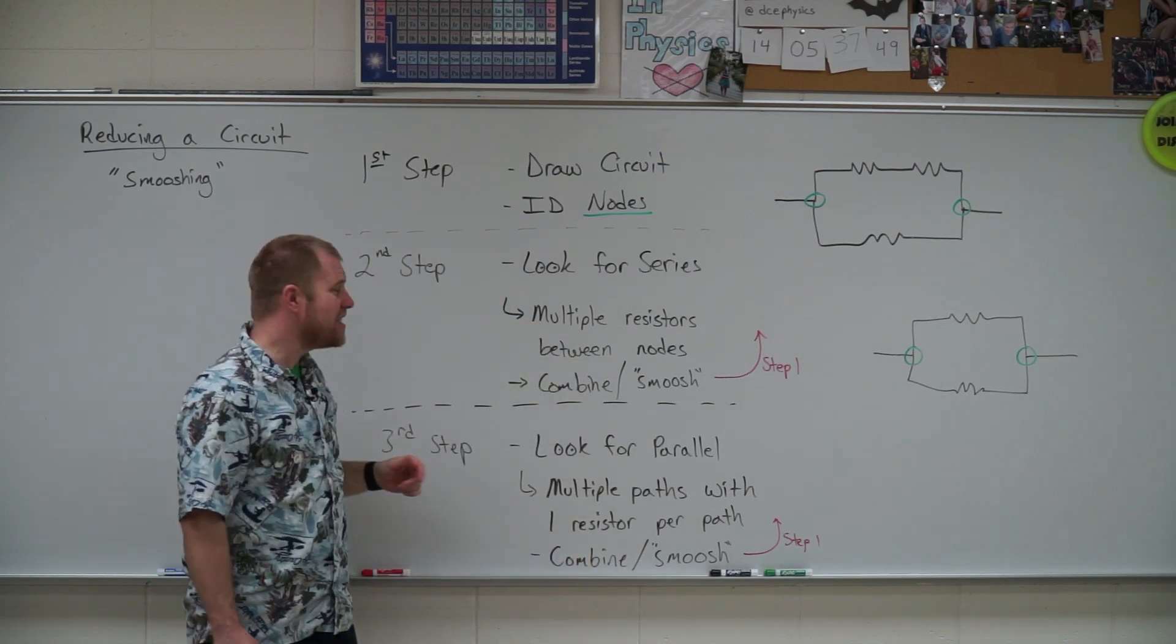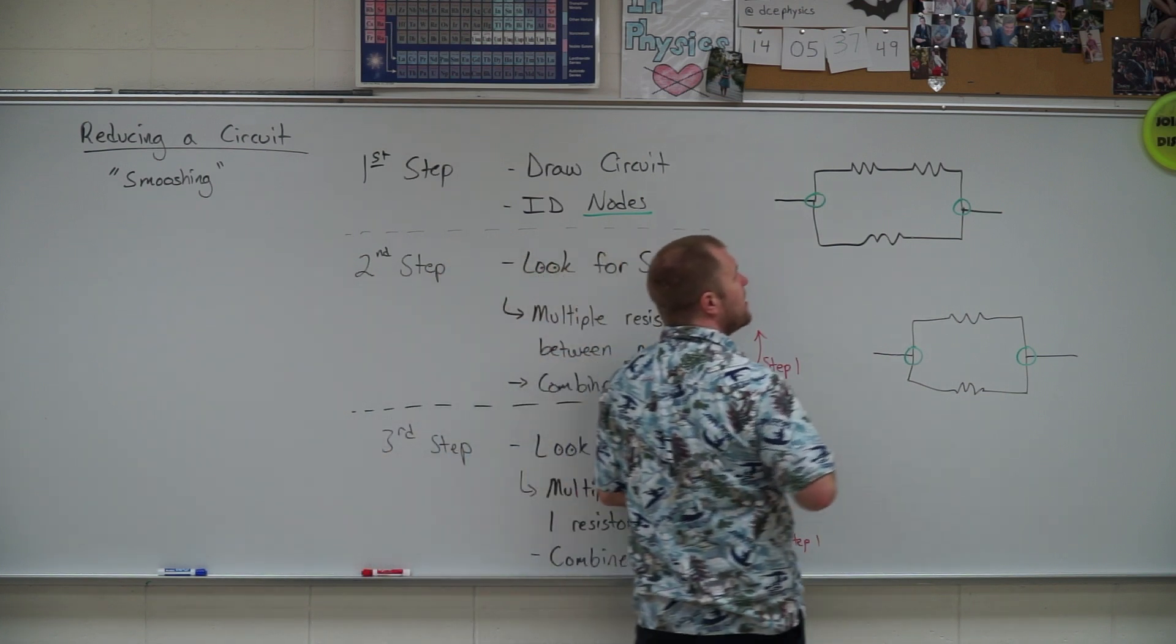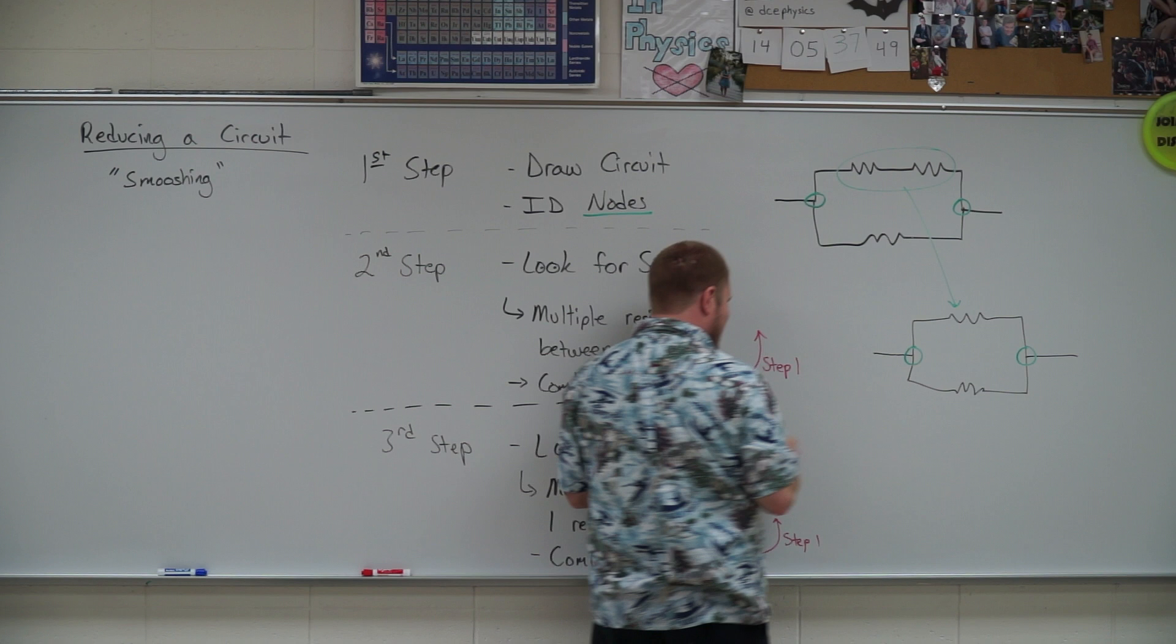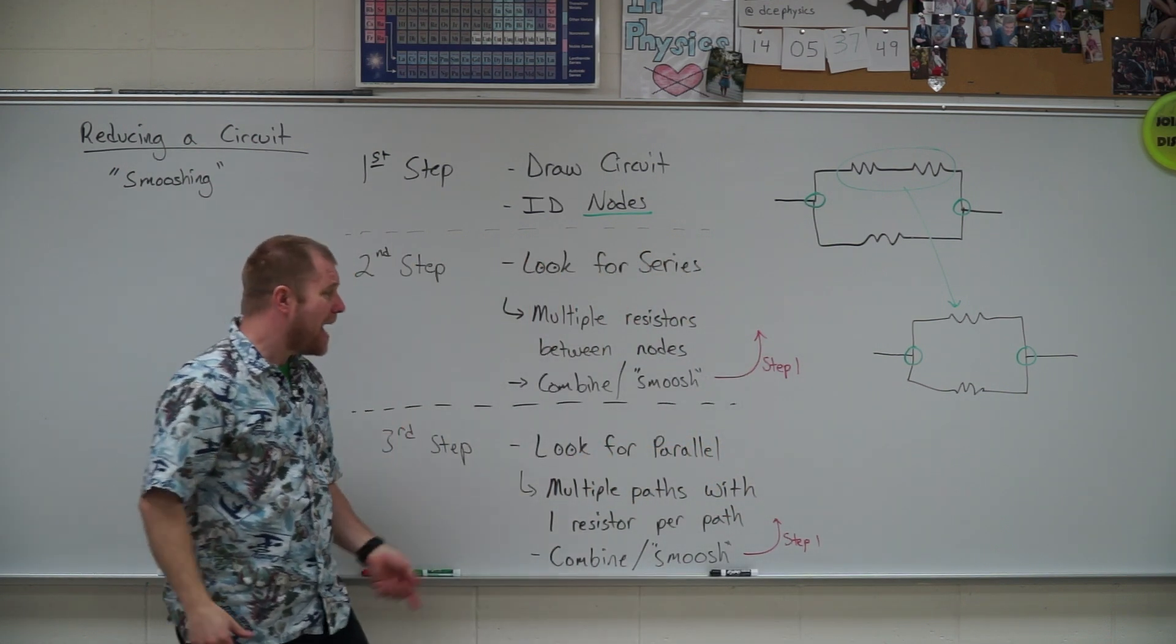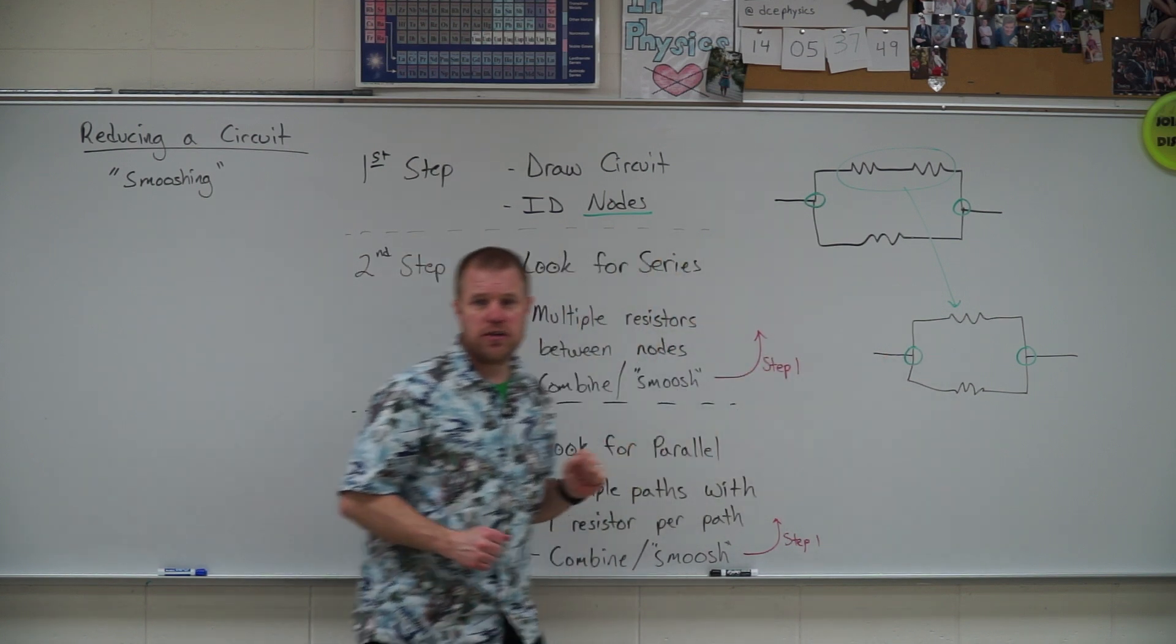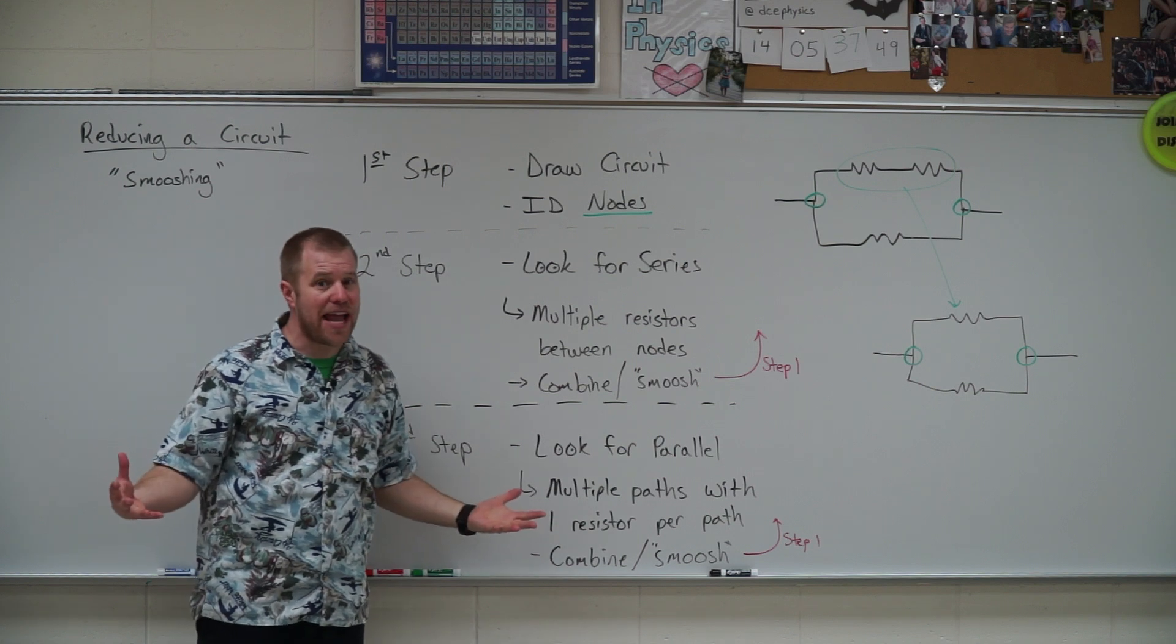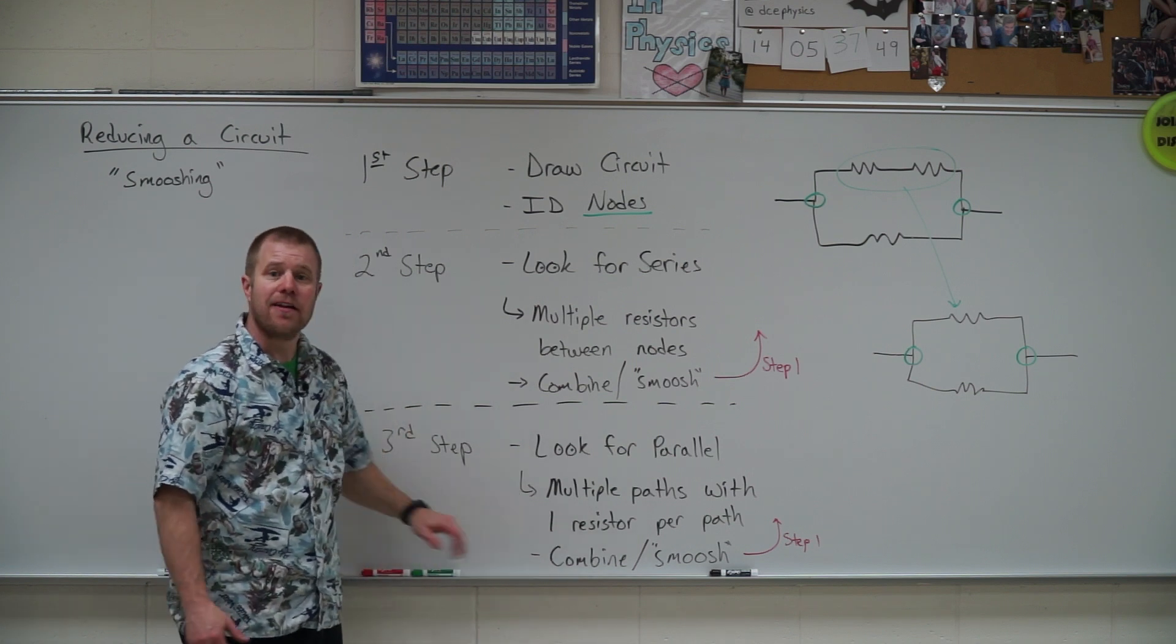So whenever I identify series, I need to combine or smoosh those together. I would take those top two and smoosh them together into a single resistor. Whenever you smoosh, whenever you combine, you always want to go back to step one - redraw that circuit, identify the nodes. Some of those nodes may have disappeared, and they definitely will disappear when you're doing parallel combinations.